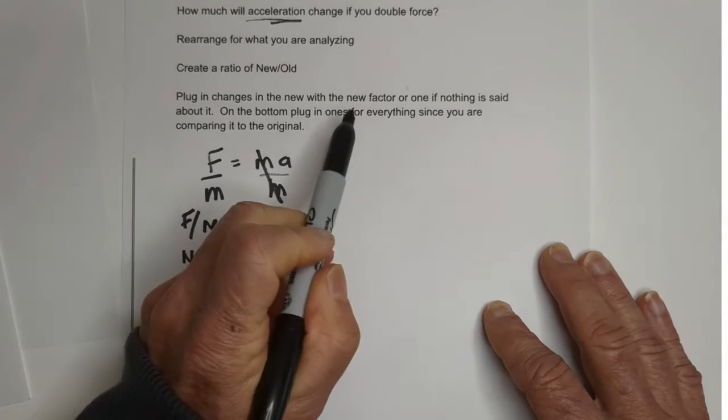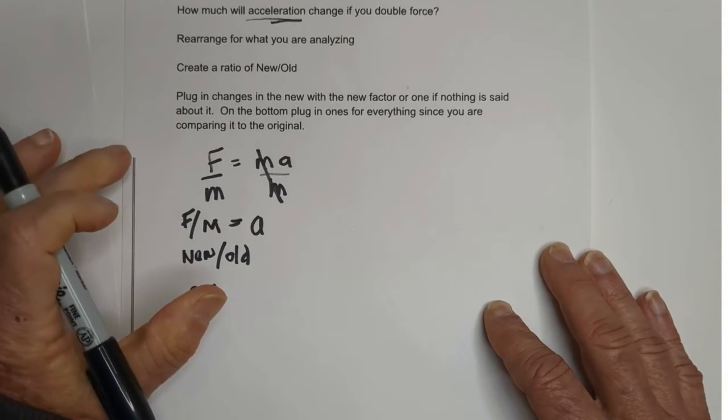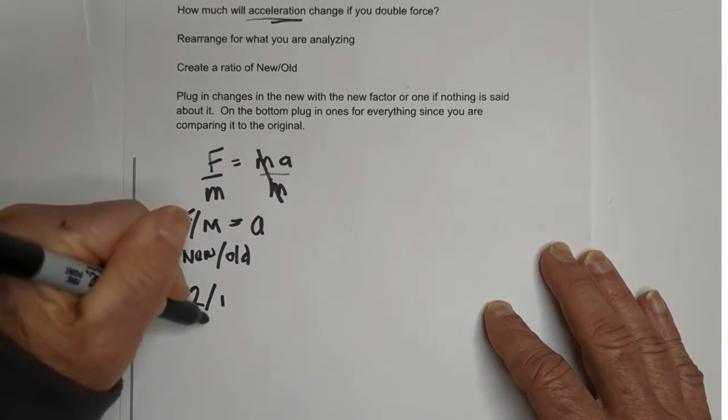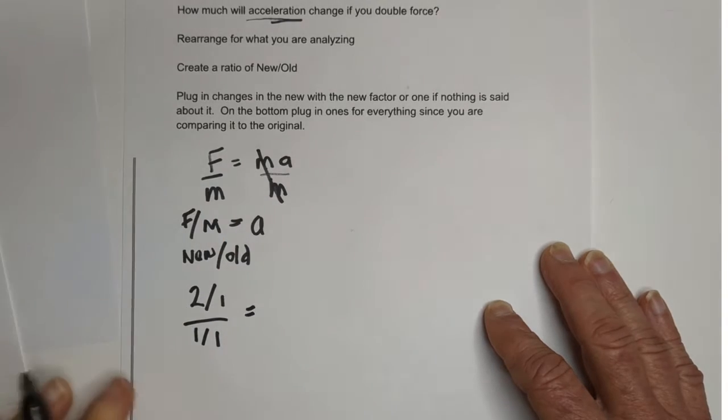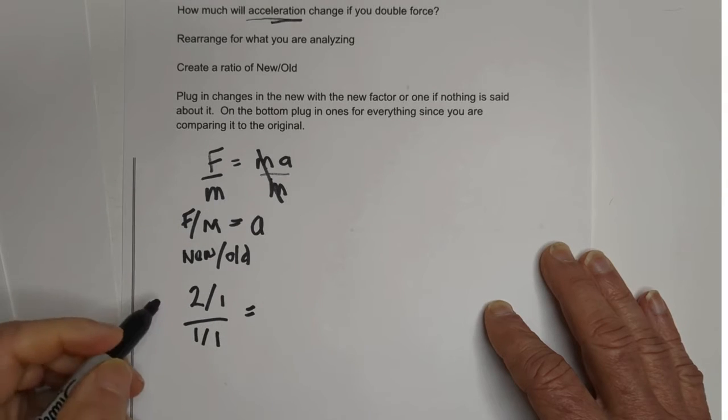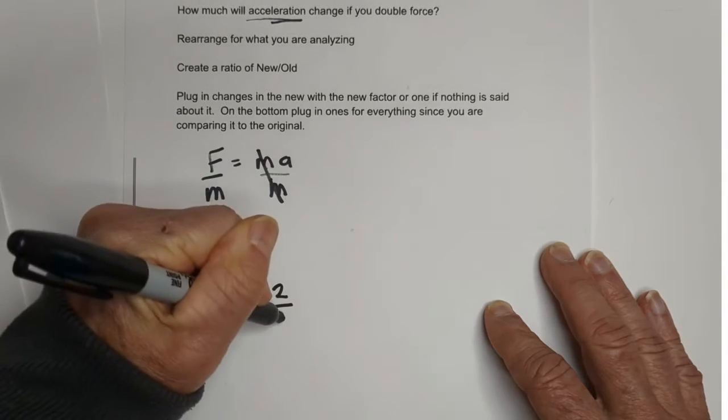Divided by—nothing is mentioned about mass, so when nothing is mentioned about it, just plug in a one. We're going to place that over one over one because that is the old and we're comparing it to it. So two divided by one is two, one divided by one is one.